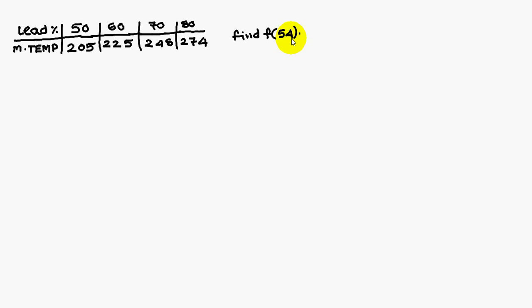For this one we are using the Newton forward interpolation. Why we are using Newton forward interpolation? This 54 lies between 50 and 60, so that is in the start-up values, therefore we will use Newton forward interpolation. If it is 75, we will use Newton backward interpolation.